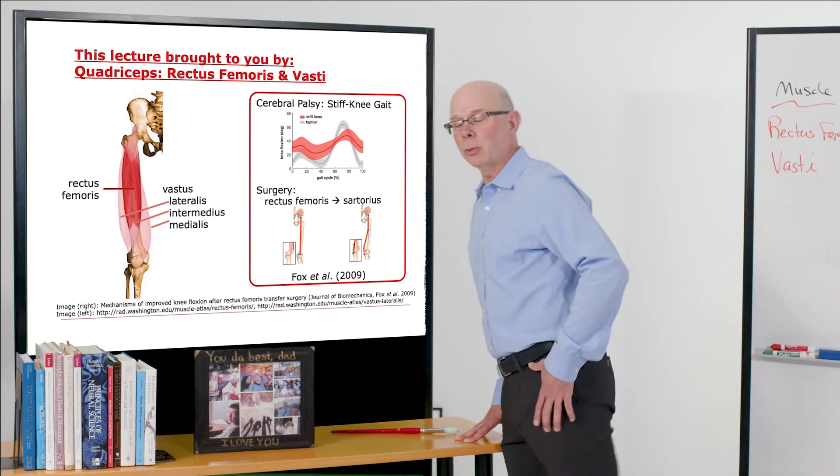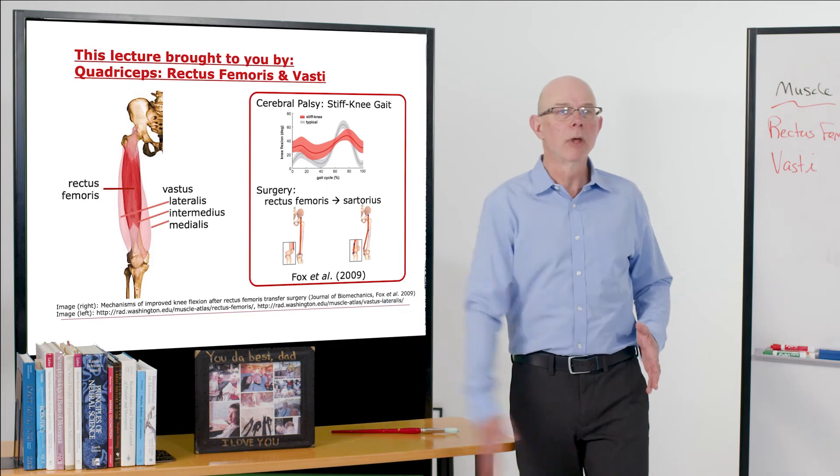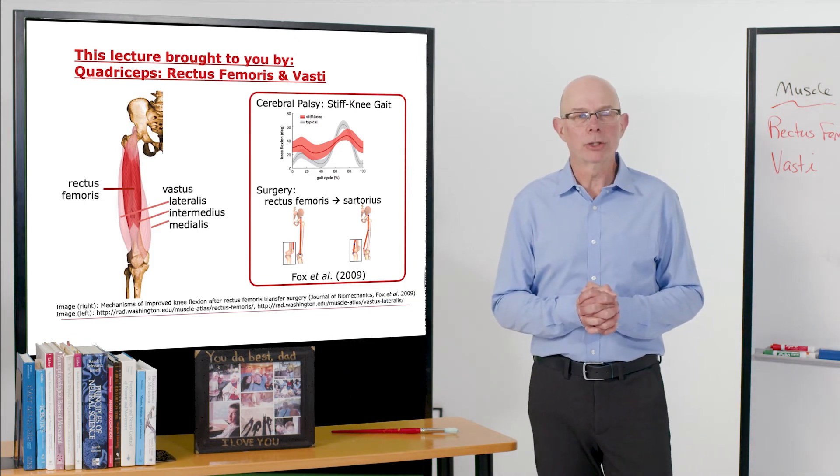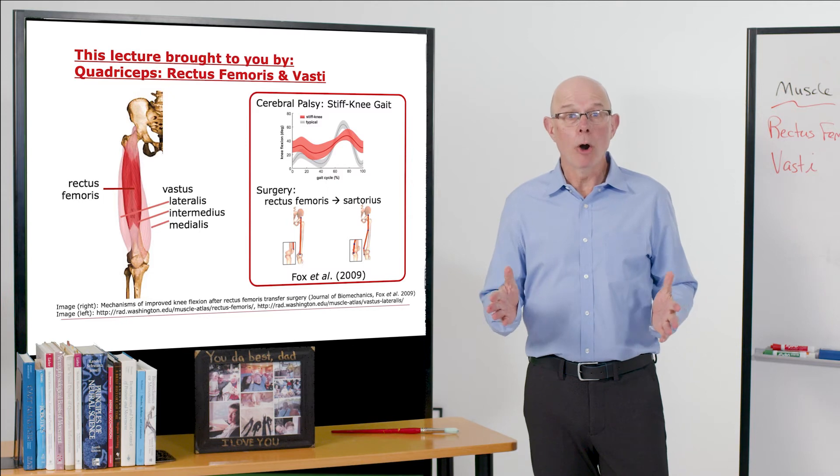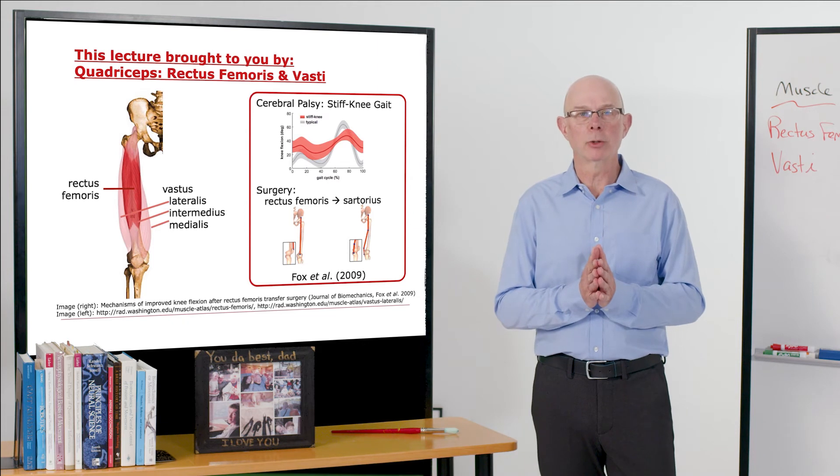Rectus femoris, hamstrings, rectus femoris, hamstrings. Those muscles are really good at swinging the leg forward and back. The other three components, the vastae, are very powerful muscles, and together the vastae plus rectus femoris make up the quadriceps.